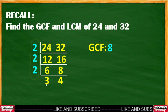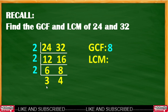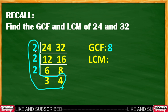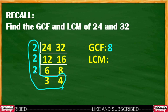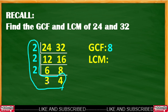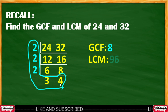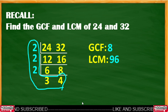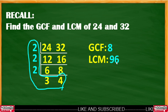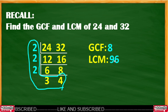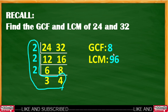The GCF is 8. And then the LCM of this number: 2 times 2 is 4, times 2 is 8, times 2 is 24, times 4 is 96. So the LCM of 24 and 32 is 96, and the GCF is 8.